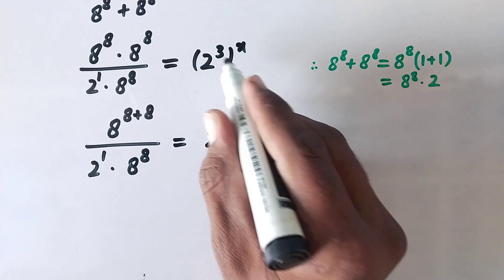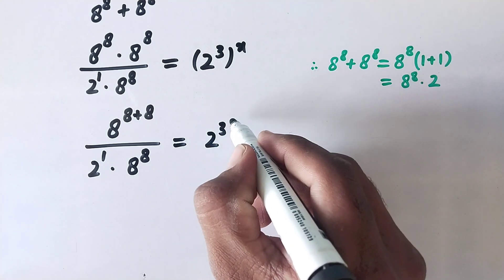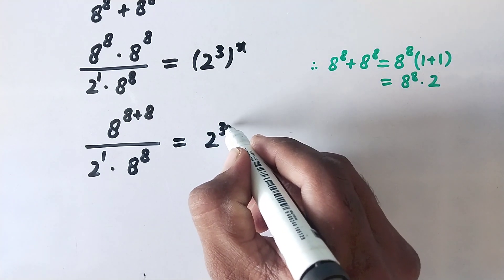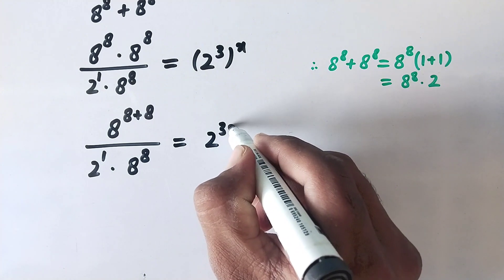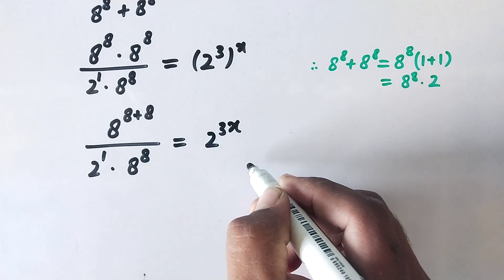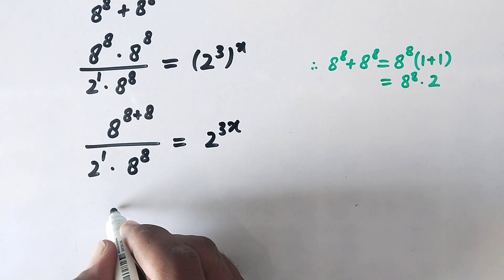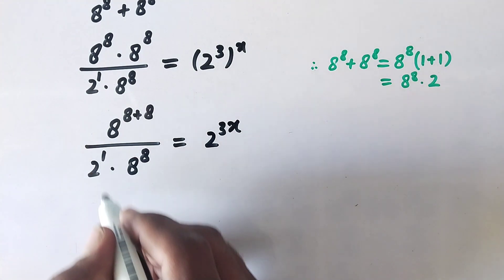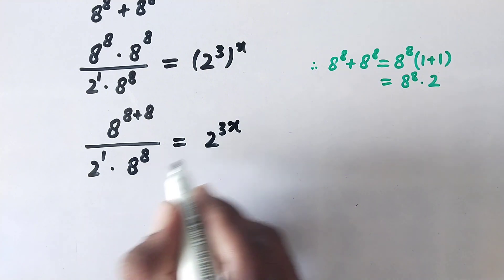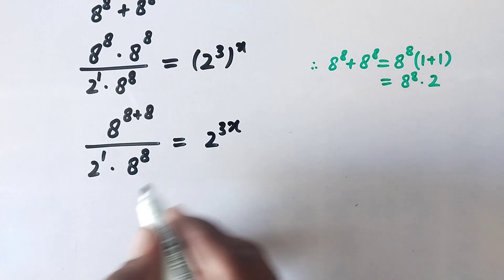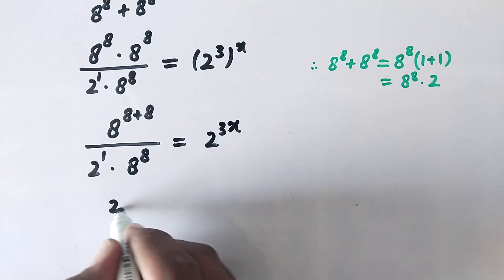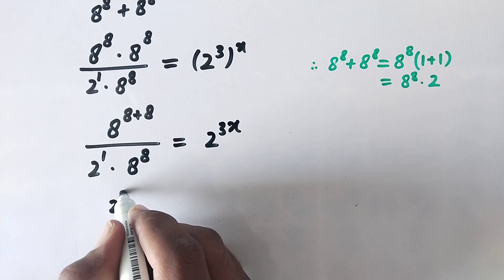Now we will multiply these powers. Here 8 to power 8 to power 8 gives 2 to power 3x. This 8 is the same as 2 cubed.